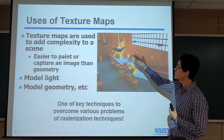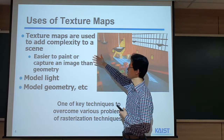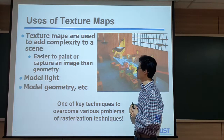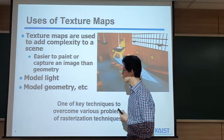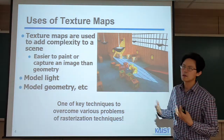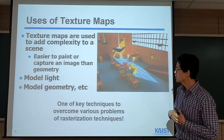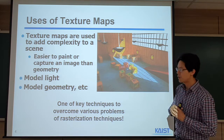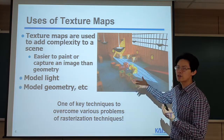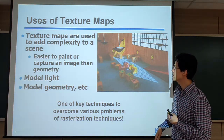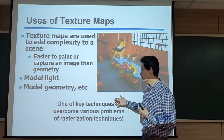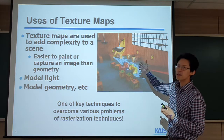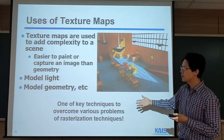Now I'd like to talk about some of the uses of texture mapping. As I mentioned before, texture mapping is used to add details to a scene. It's much easier to paint or capture images than to create 3D geometry. So we use texture mapping to model complex light and also to model complex geometry. There are a lot of applications of texture mapping for adding realistic features within rasterization, commonly used in games.